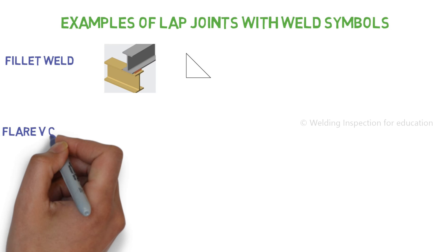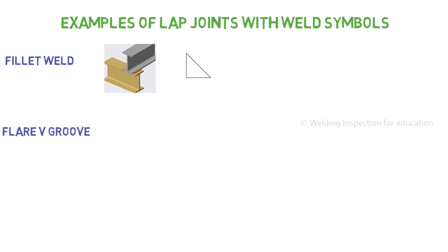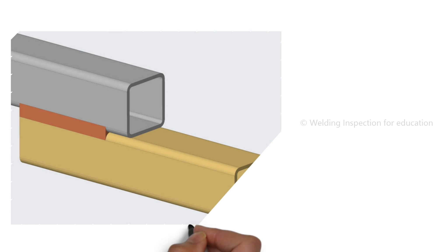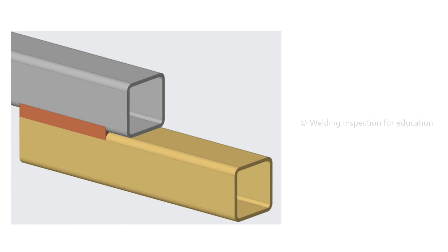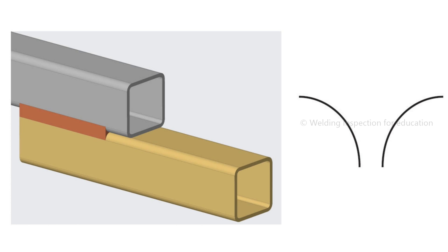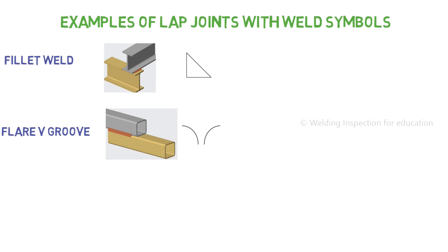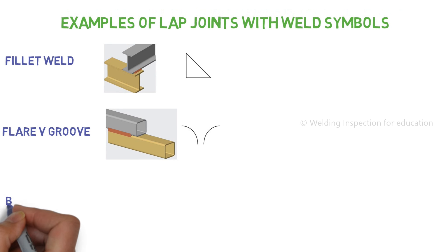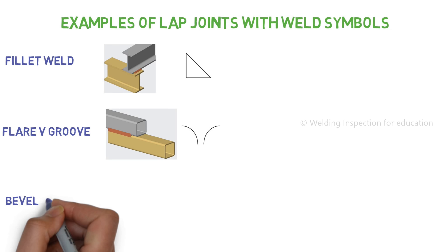Lap joint flare V groove: flare V groove means a weld between radius to radius, or curved surface to another curved surface. For example, when you are welding one tube to another tube, or one pipe to another pipe.